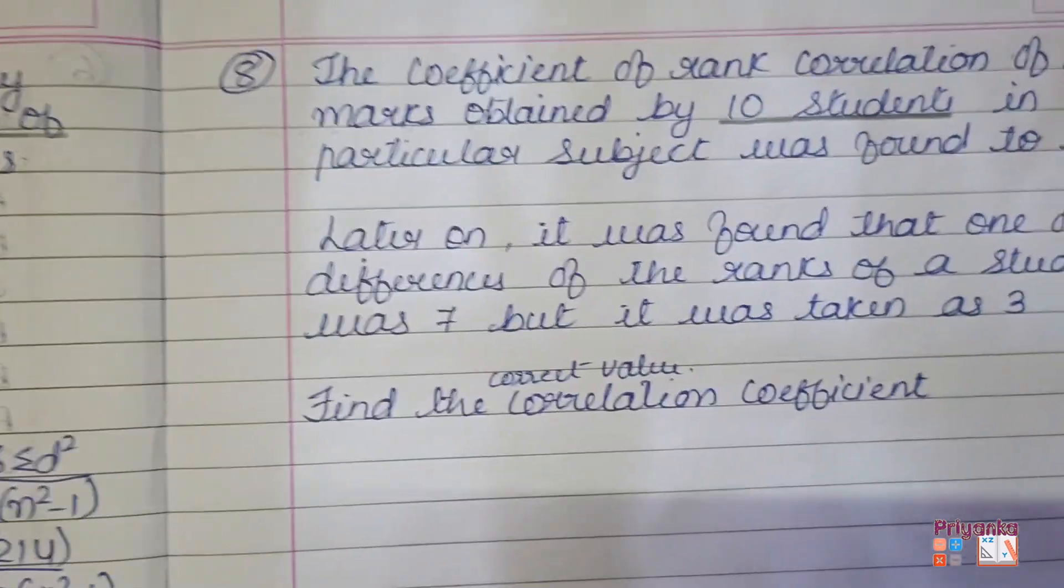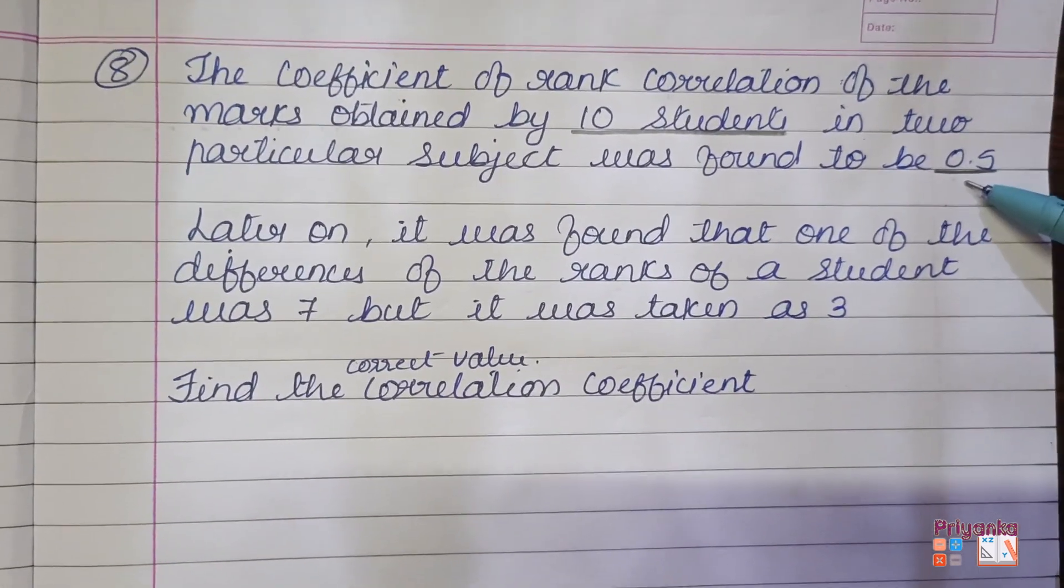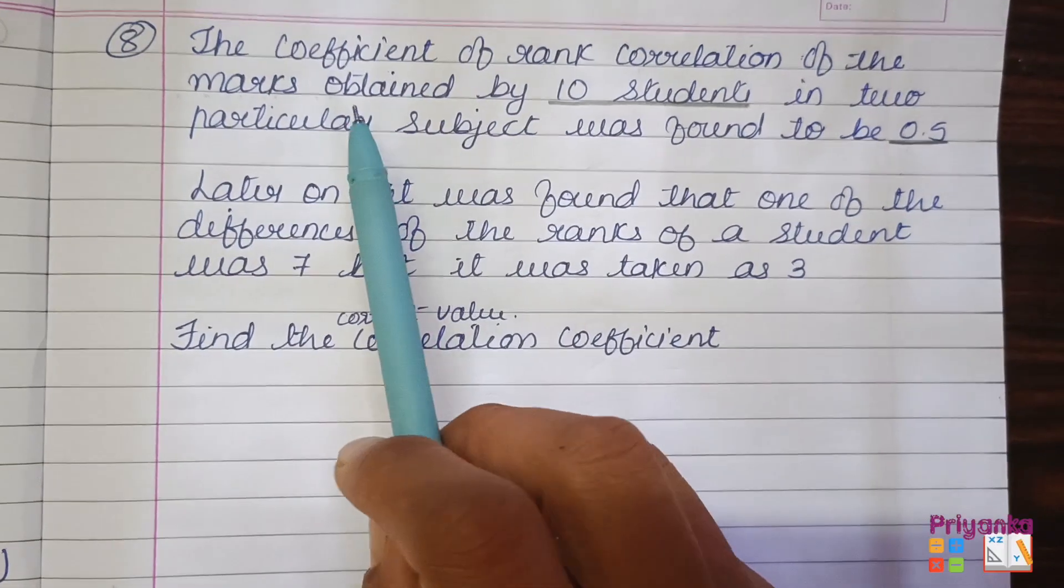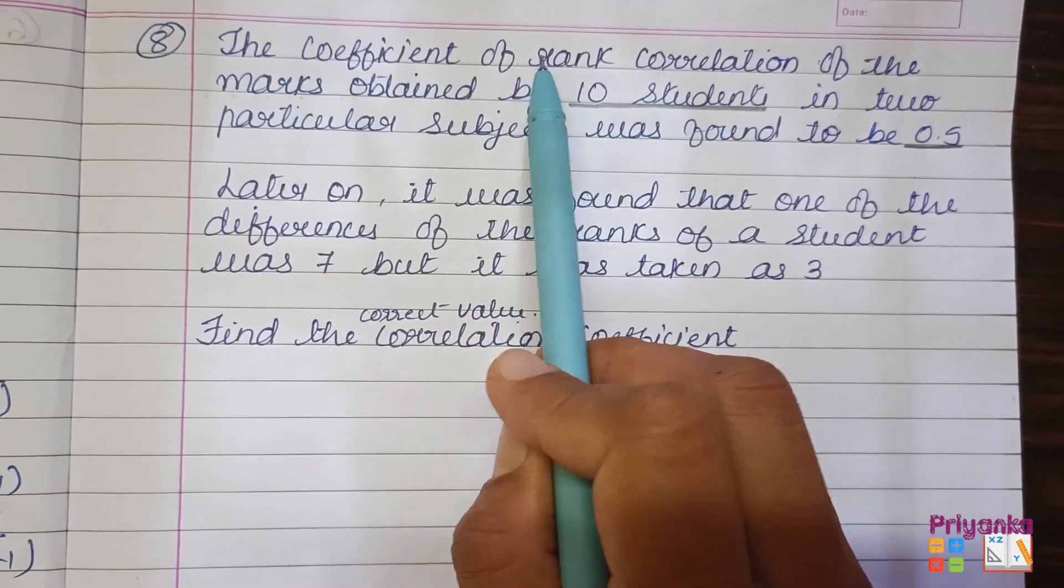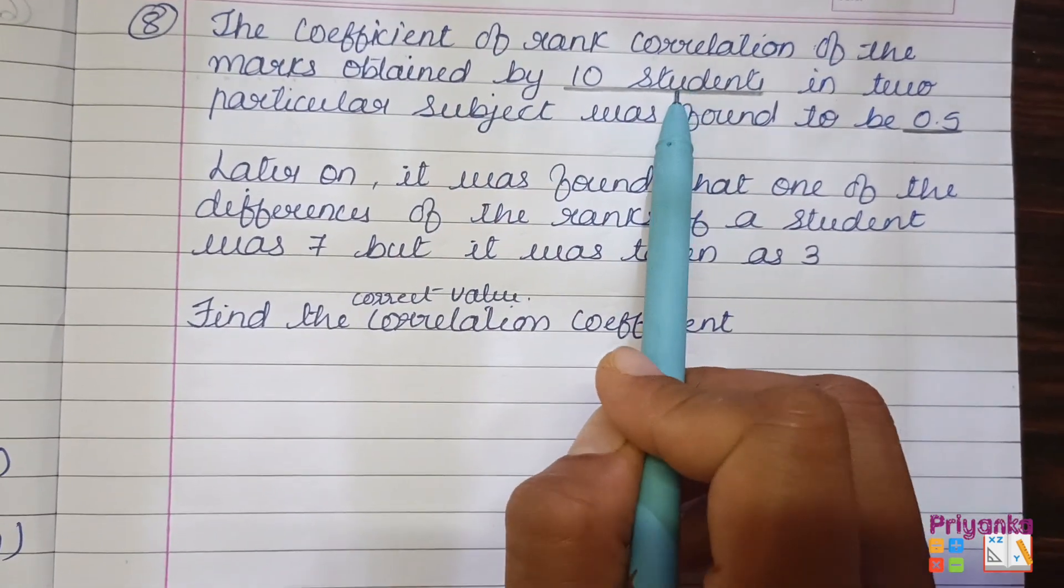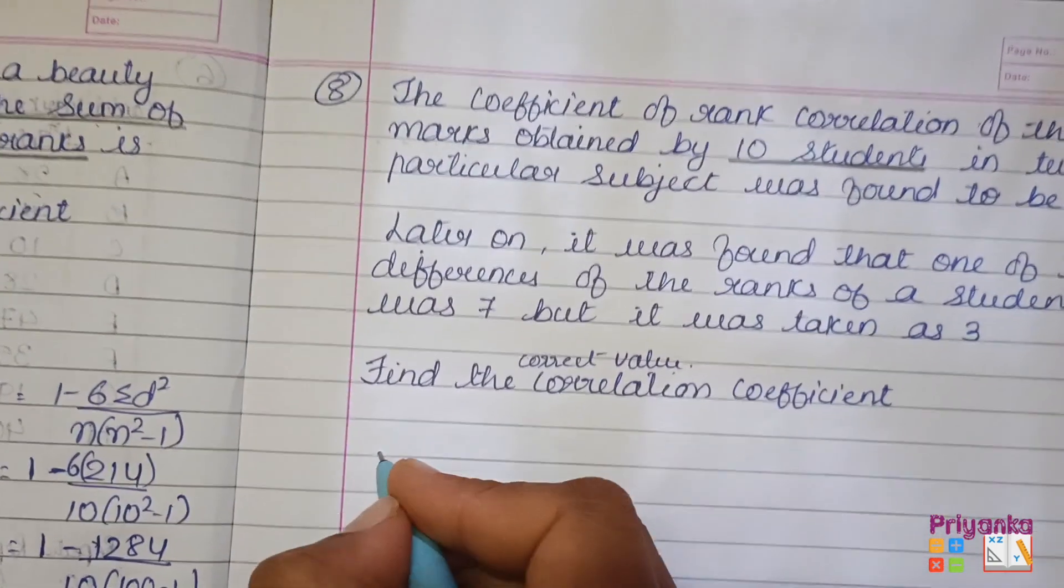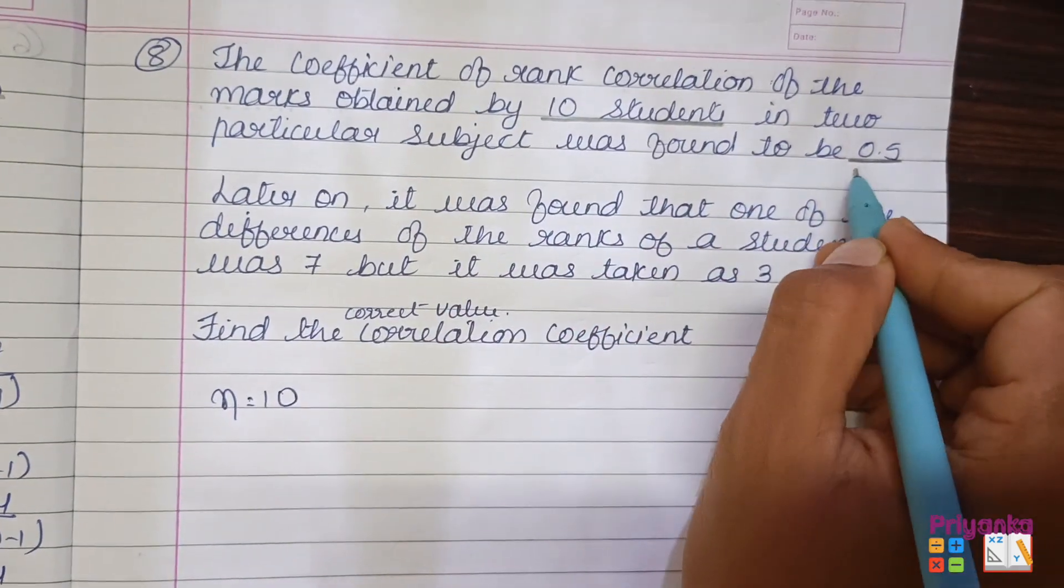So here I took the question and divided it into the information which has been provided. Here I took the 10 students. The rank correlation of the marks obtained of 10 students, that means n will be 10.